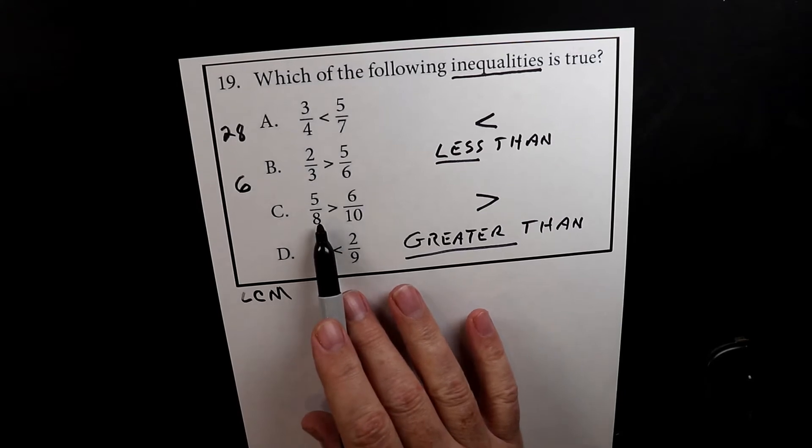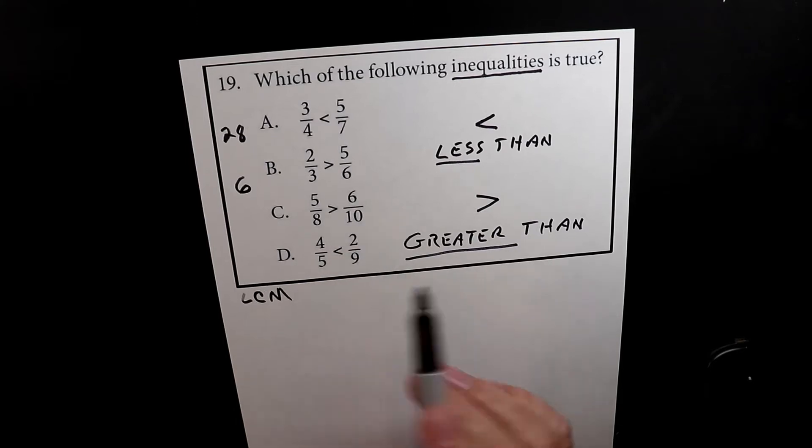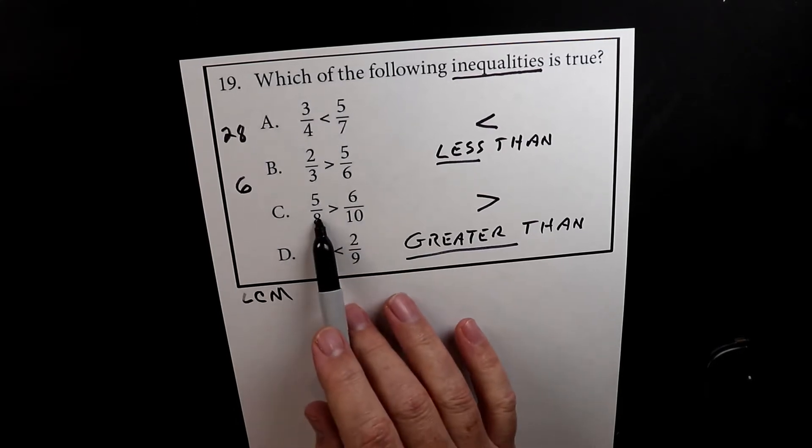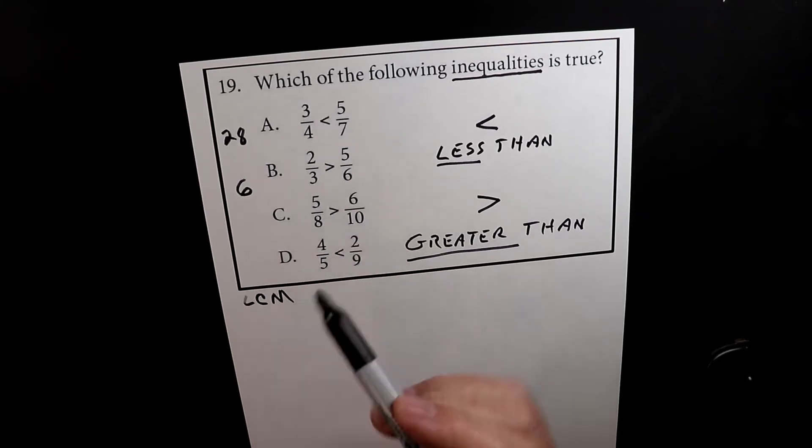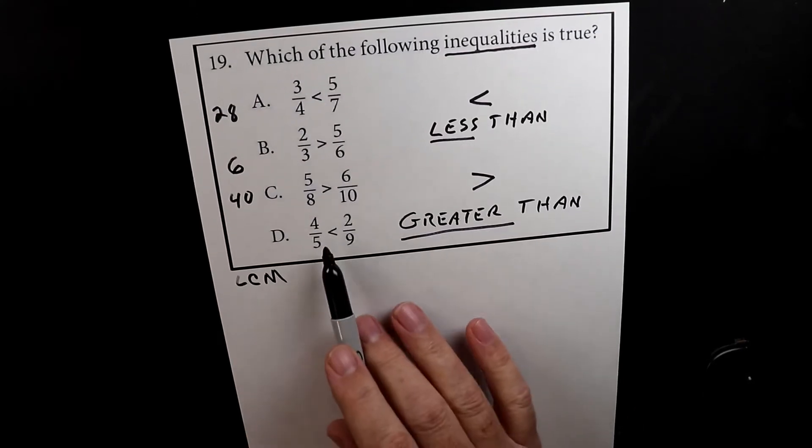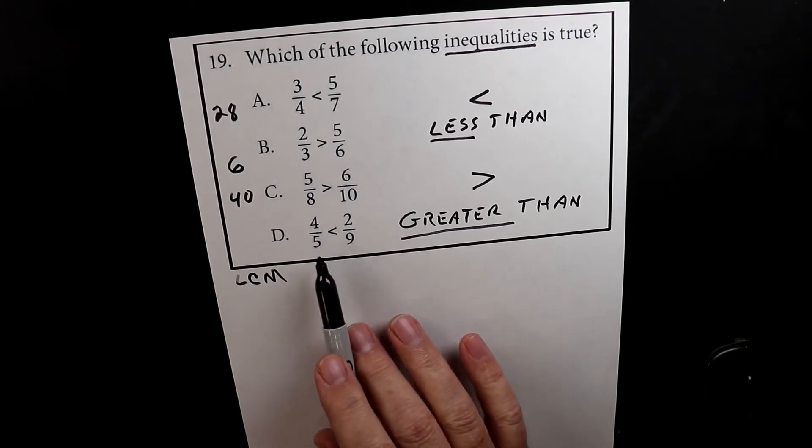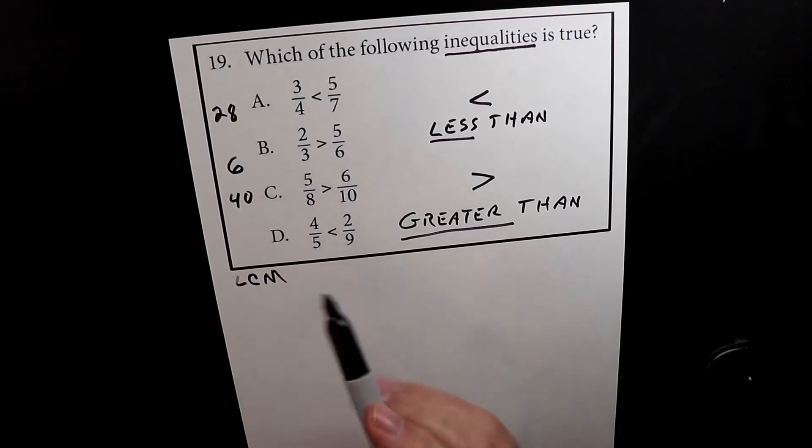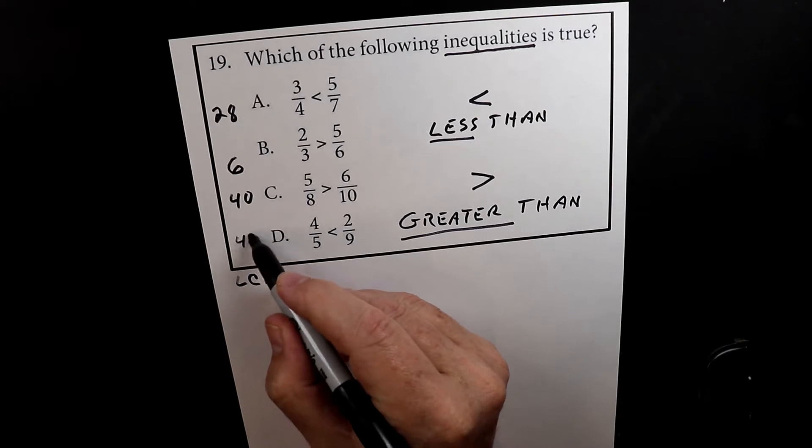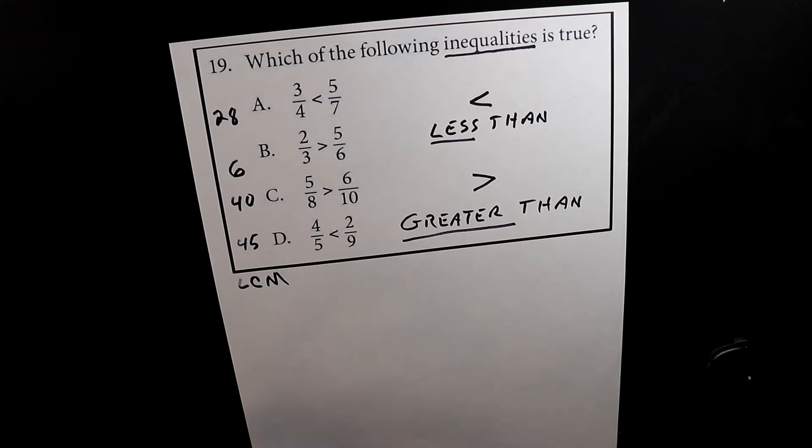For here we have 8 and 10. The least common multiple for these is 40. 5 times 8 is 40, 4 times 10 is 40. And then the last one we have is 5 and 9. The least common multiple of 5 and 9 is 45. 9 times 5 is 45, and 5 times 9 is 45.